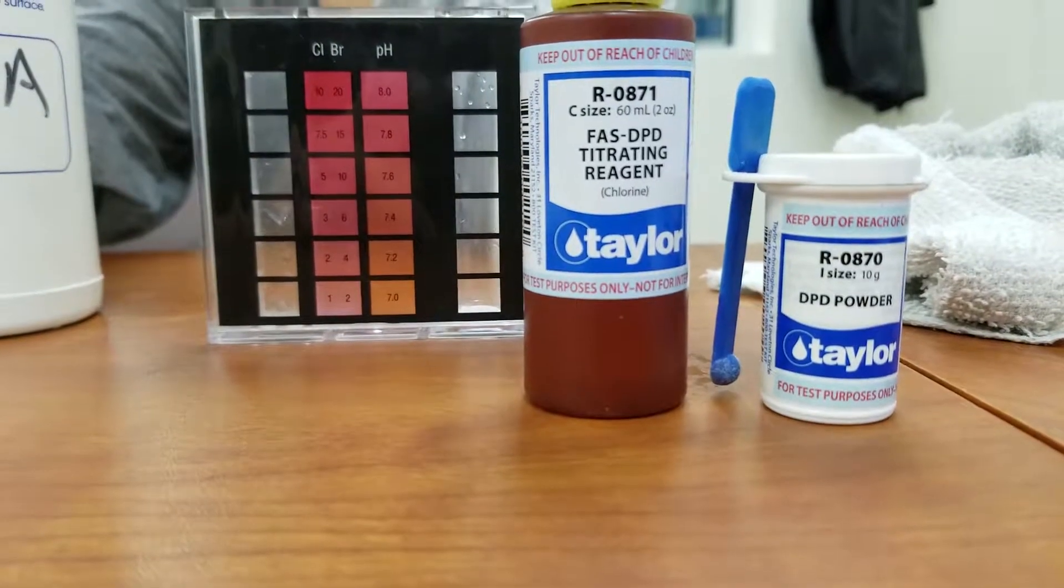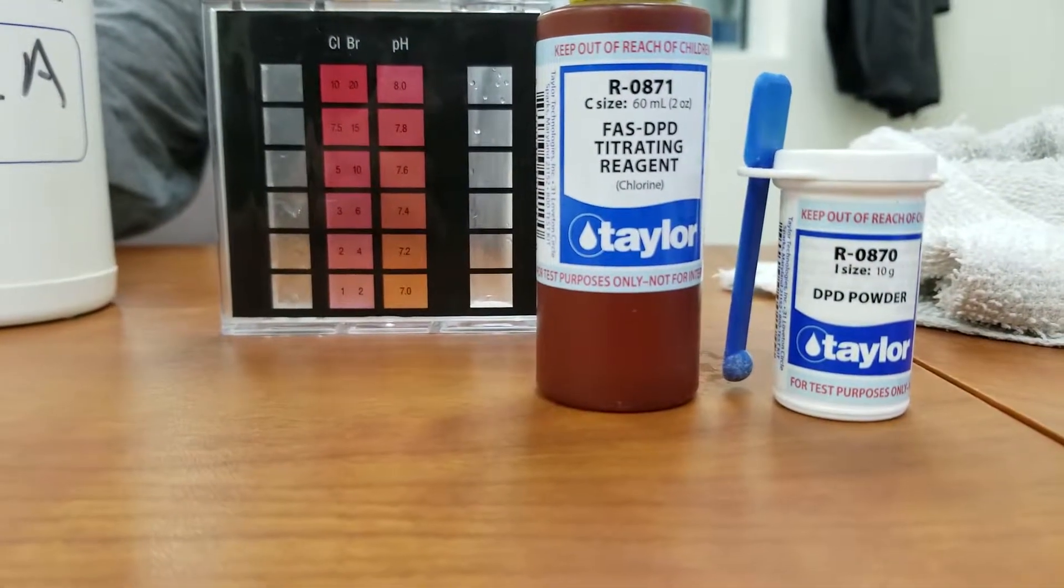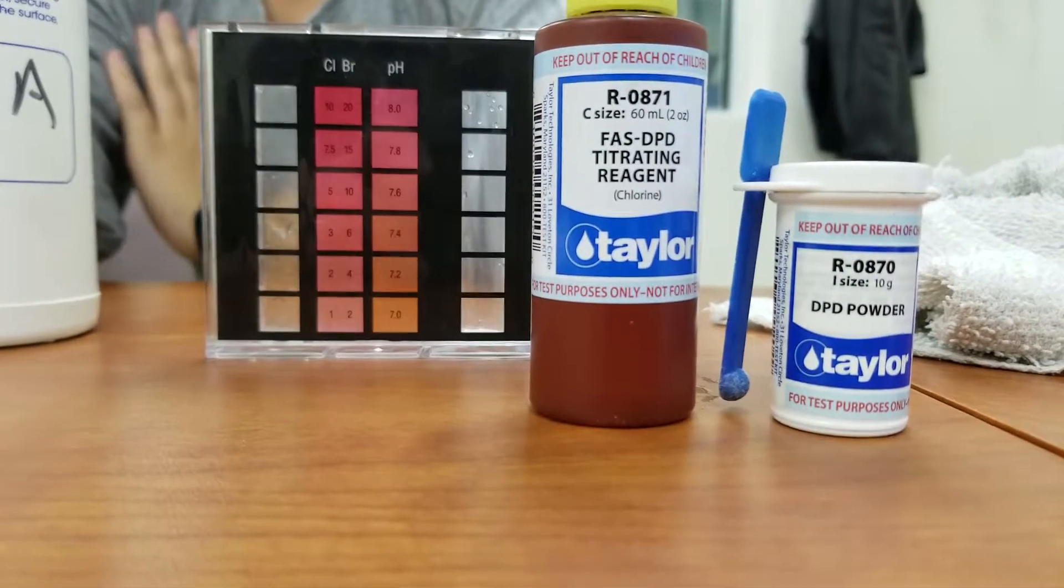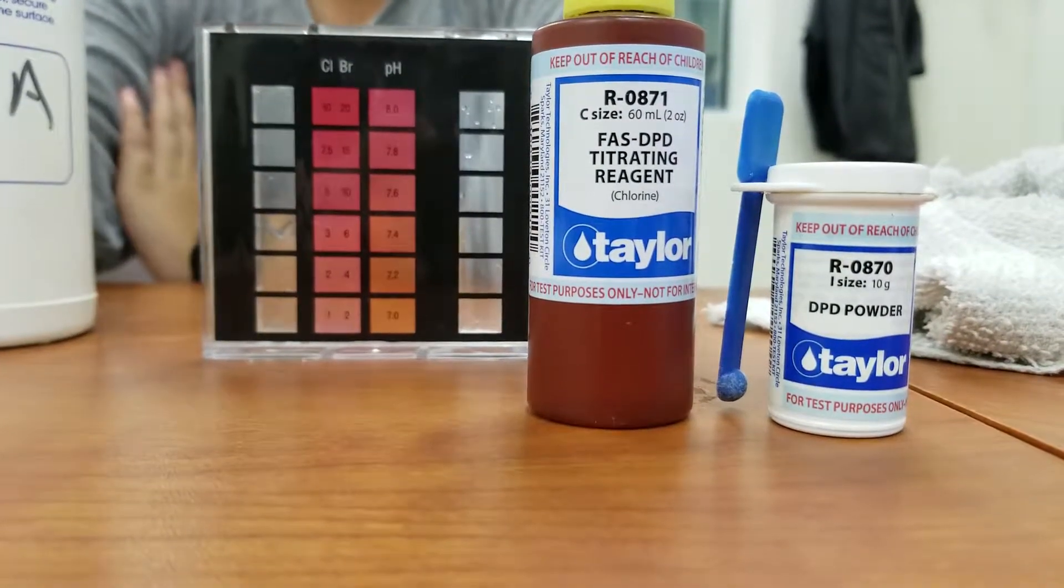This next test is going to be for our free chlorine using the FAS DPD. This is a titration, which is a lot easier to use than using our R001 and R002.